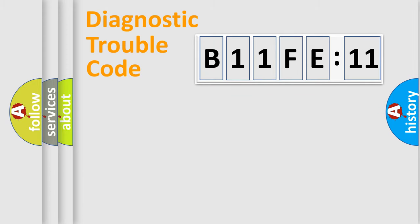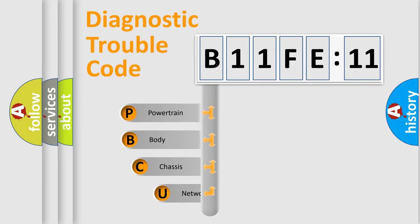Powertrain, body, chassis, network. This distribution is defined in the first character code.